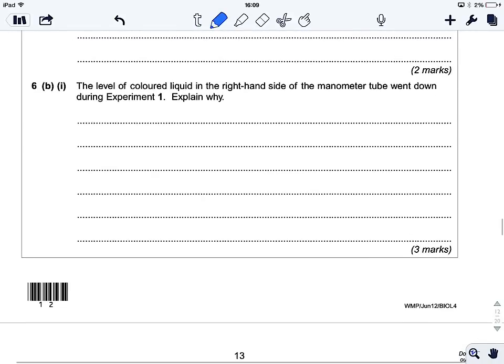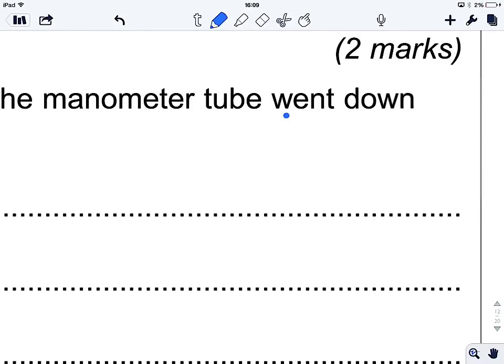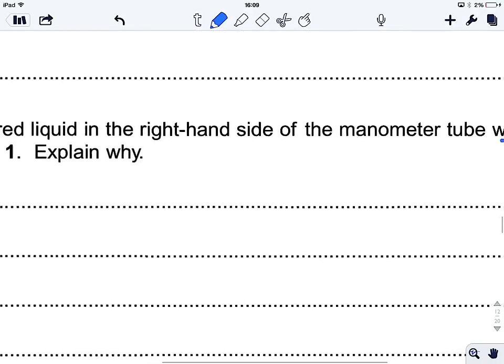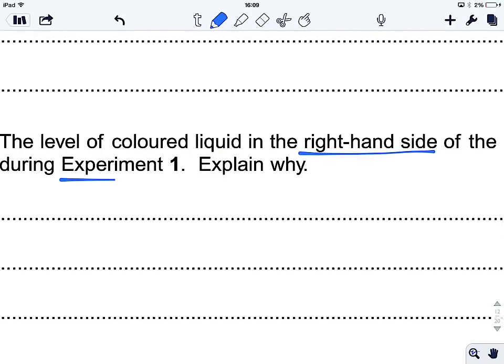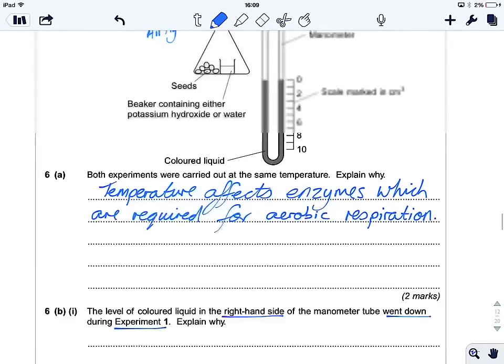The level of coloured liquid in the right-hand side of the manometer tube went down during experiment one. Explain why. So, it went down, right-hand side, experiment one, key information.